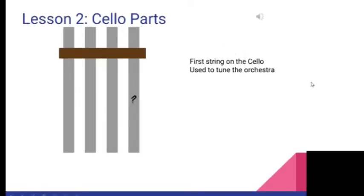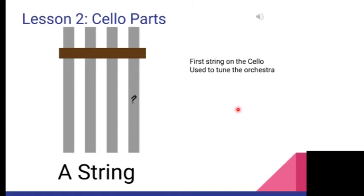The first thing I want to talk about on the cello is the A string. The A string is the first string, as you see right here. And actually, it's the note that is used to tune the orchestra.